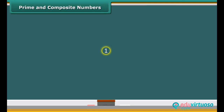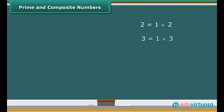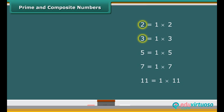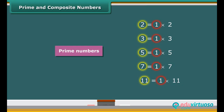Look at the number one — it has only one factor, the number one itself, so one is a unique number. Look at numbers like two, three, five, seven, and so on. These numbers have exactly two factors: one and the number itself. Numbers that have only two factors are called prime numbers.